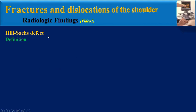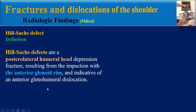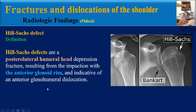What is the definition of Heel Socks Defect? Heel Socks Defects are a posterolateral humeral head depression fracture resulting from the impaction with the anterior glanoid rim, indicative of an anterior glono-humeral dislocation.